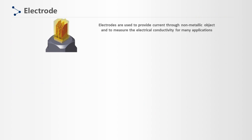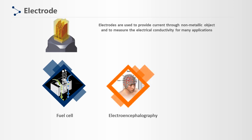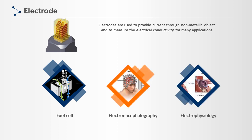An electrode is an electrical conductor for making contact with a non-metallic portion of a circuit. Electrodes are used to provide current through non-metallic objects and to measure electrical conductivity for many applications, such as fuel cells, electroencephalography for recording brain activity, and electrophysiology techniques in biomedical research.